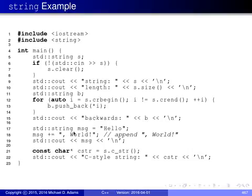Continuing the code example: a string variable msg is initialized to "hello", then the string ", world!" is appended using the compound operator+=, and msg is printed. Lastly, c_str() is called on s to obtain a const pointer to char representing a C-style null-terminated string, which is then printed.